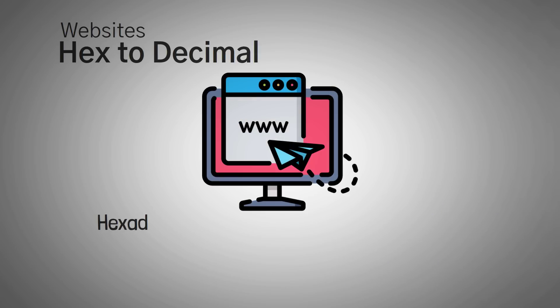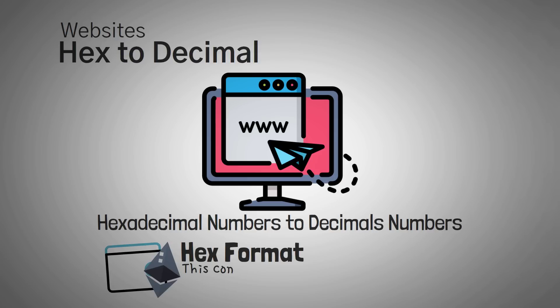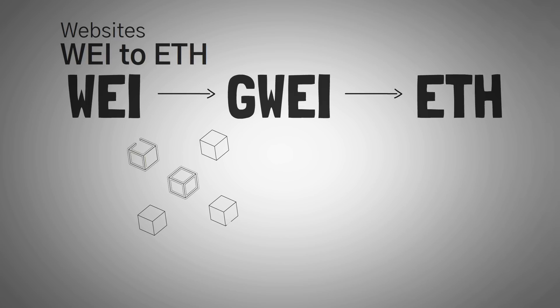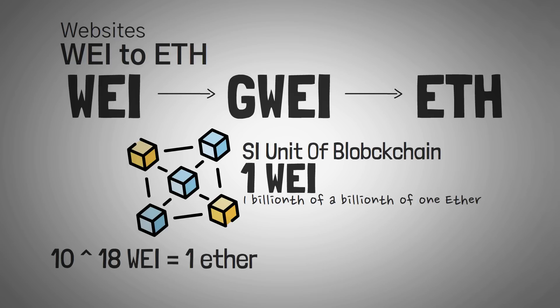Another tool I use often is Hex2Decimal — a simple website that converts hexadecimal numbers to decimal numbers. In development, we often see things as hexadecimal numbers, and even Ethereum addresses are in hex format. Finally, there's the Wei to ETH converter. This tool converts Wei to Gwei to ETH and back. The standard unit on Ethereum is one Wei, which is one billionth of a billionth of one Ether — 10 to the power of 18 Wei equals one Ether, and 10 to the power of 9 Wei equals one Gwei. Using this calculator saves a lot of errors and confusion.